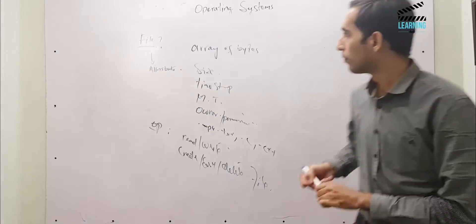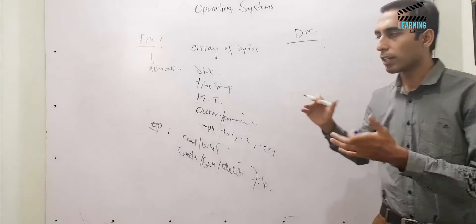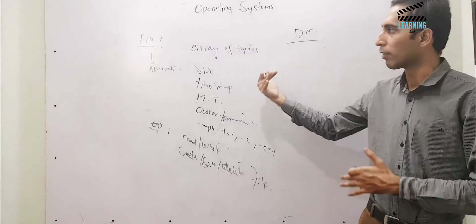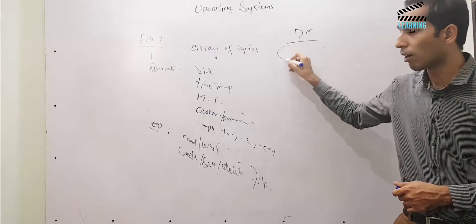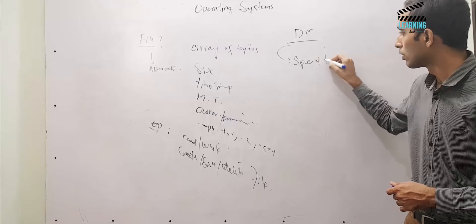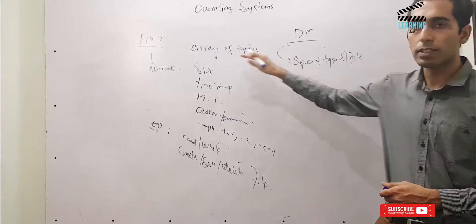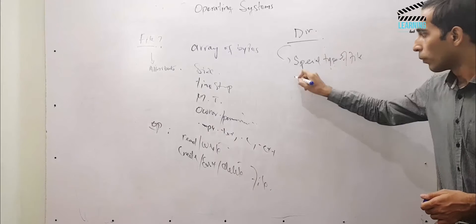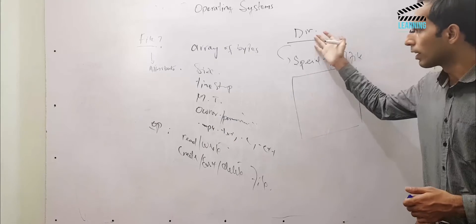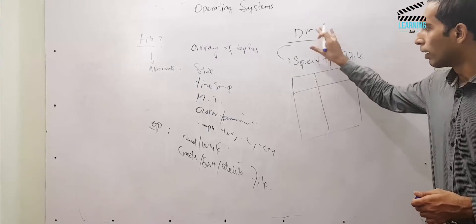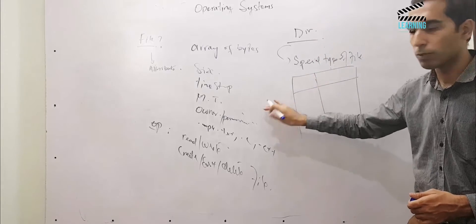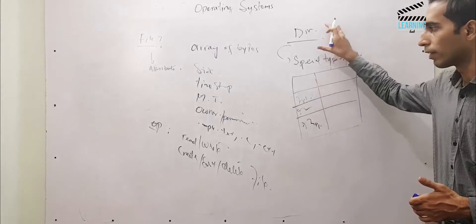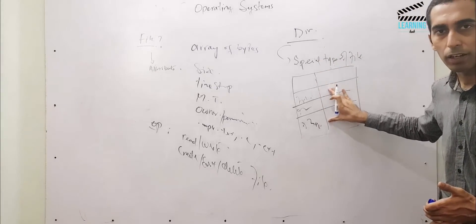Similarly, we have directories. By directory, we mean that when we create files, they have to be in a folder — maybe on the desktop or in C drive. A directory is also a file, but a special type of file. Again it's an array of bytes and may have some properties and permissions. Additionally, a directory maintains a record of the files it contains — for example, file1, file2, file3.txt — multiple files. So directories maintain records of files on the hard disk.